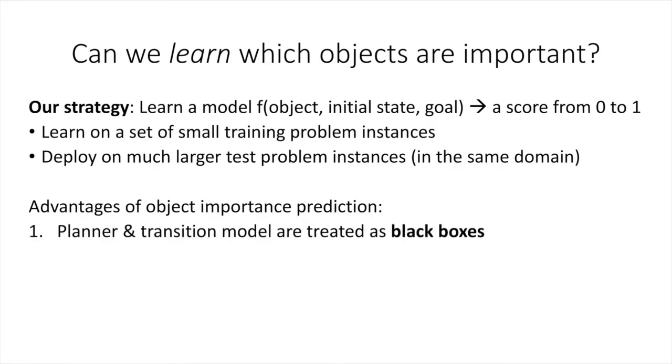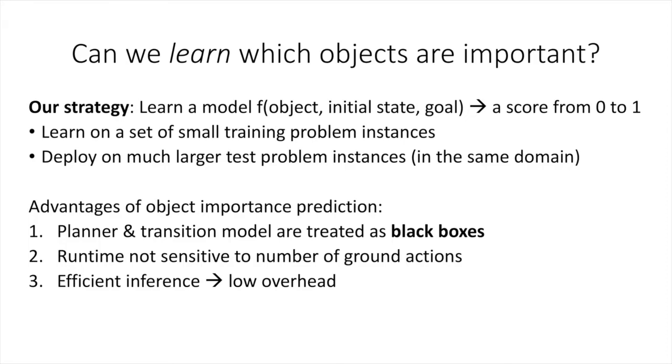First, object prediction allows us to treat the underlying planner, whether a classical planner, task and motion planner, or something else, as a black box. Second, its runtime is insensitive to the number of ground actions in the problem. Third, object prediction allows for efficient inference. And fourth, we can afford to make errors in one direction. It's not so bad for the model to think that a particular object is important when it actually isn't for the given goal.